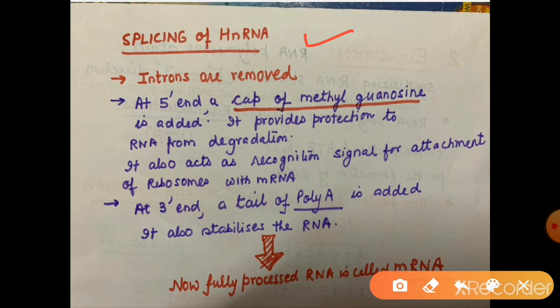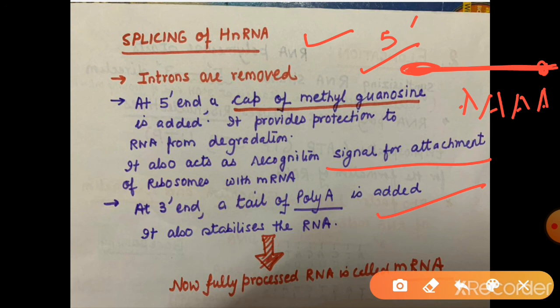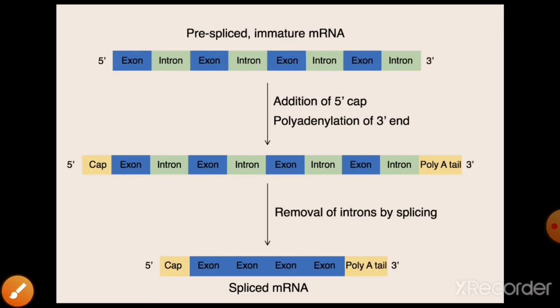After intron removal, the messenger RNA undergoes further modification. A 5' methyl guanosine cap is added to the 5' end - this provides protection and prevents degradation, and also provides a recognition signal for ribosome attachment. A poly-A tail (multiple adenines) is added to the 3' end to stabilize the messenger RNA. After capping, tailing, and splicing to remove introns, the heterogeneous RNA becomes a proper mature messenger RNA. This processed messenger RNA then exits the nucleus through nuclear pores to the cytoplasm.